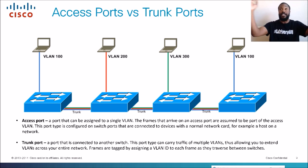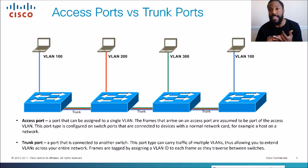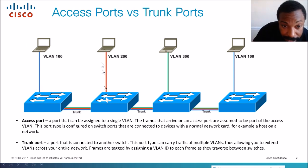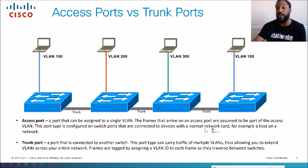Usually it's end hosts connected to access ports — a UPS, a tablet, a PC, a laptop — and it's usually associated with just a single VLAN. This access port is associated with VLAN 100, this one with VLAN 200, this is 300. An access port is a port assigned to a single VLAN. Frames arriving on an access port are assumed to be part of the access VLAN. This port type is configured on switch ports connected to devices with a normal NIC card.